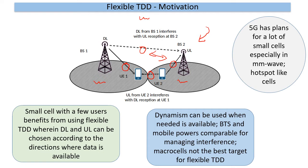Where it gets more interesting is in some very specific small cell use cases, possibly in FR2, where we could have a very small number of users active at any given time with heavy downloads and uploads, for which we are going to need a lot more flexibility. The flexibility in TDD is going to address even these kinds of situations.